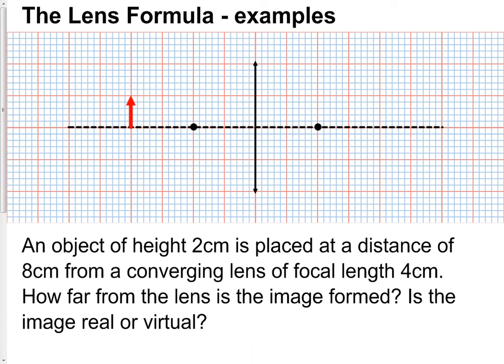Both these examples involve finding the image distance, which is the distance from the lens to the image. But as you know, there are three different things in the lens formula, so you could be asked to calculate any of those, not just the image distance - it could be the object distance or it could be the focal length.